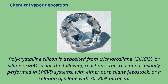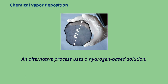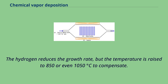Polycrystalline silicon is deposited from trichlorosilane or silane using the following reactions. This reaction is usually performed in LPCVD systems, with either pure silane feedstock, or a solution of silane with 70-80% nitrogen. Temperatures between 600 and 650 degrees Celsius and pressures between 25 and 150 pascals yield a growth rate between 10 and 20 nanometers per minute. An alternative process uses a hydrogen-based solution. The hydrogen reduces the growth rate, but the temperature is raised to 850 or even 1050 degrees Celsius to compensate.